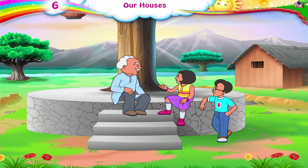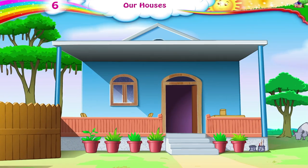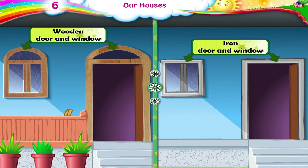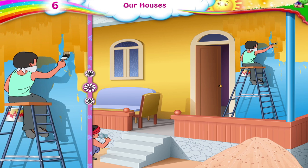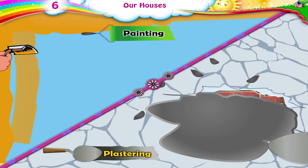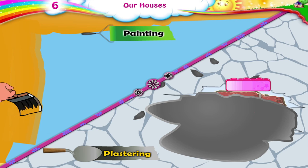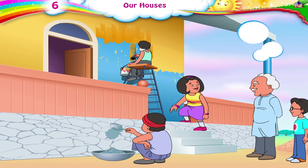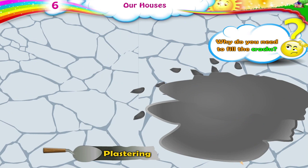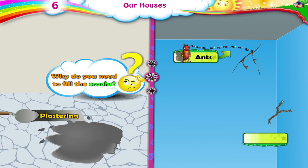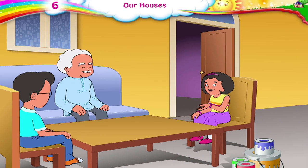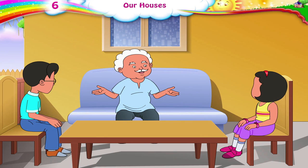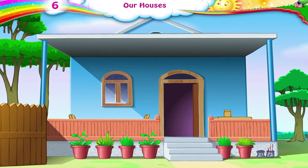And what about the doors and windows? Dadaji, why are you getting the house painted? Painting a house protects it from rain and moisture. Plastering and painting fills the cracks in the walls and keeps it in good condition. It prevents insects like ants and termites from hiding in the cracks and causing a nuisance. Painting makes the house look clean and attractive.